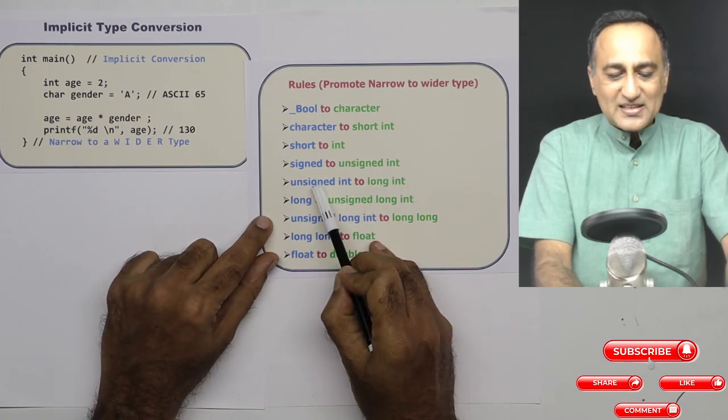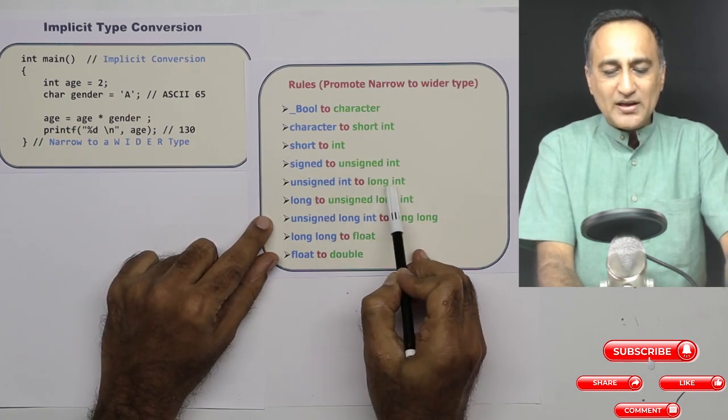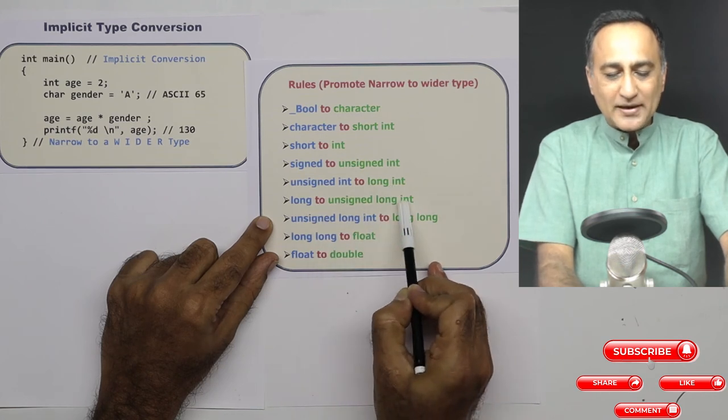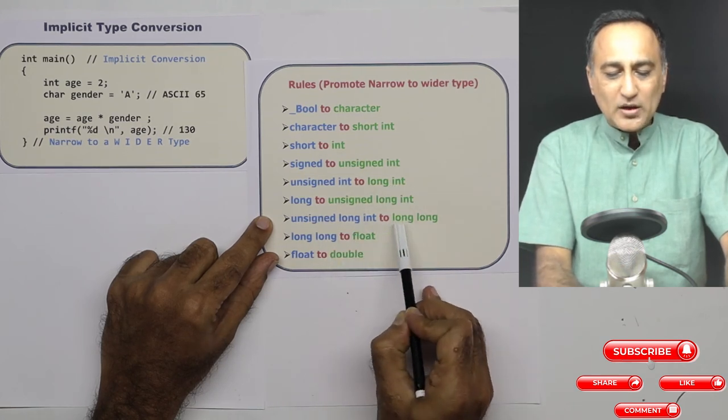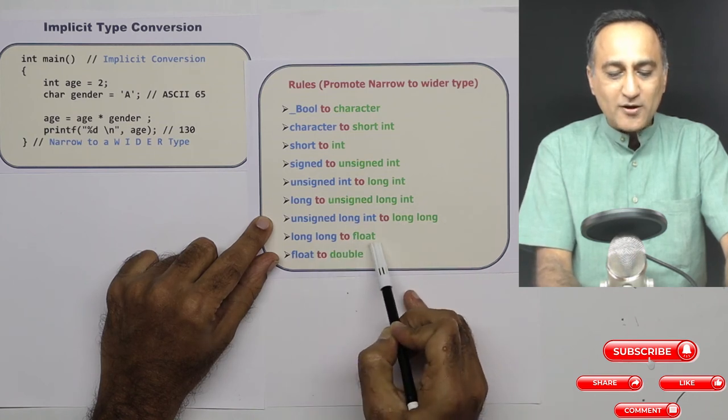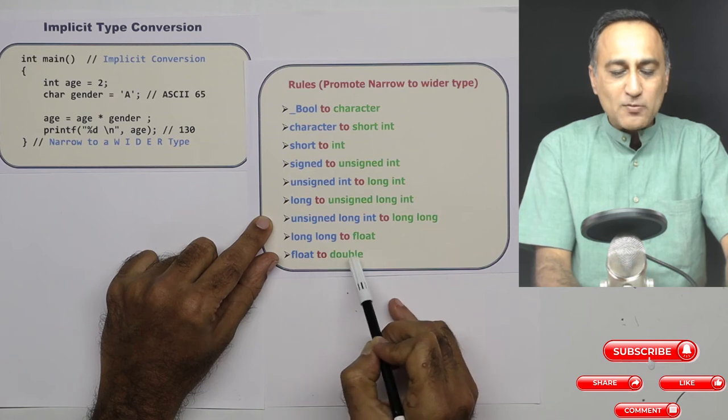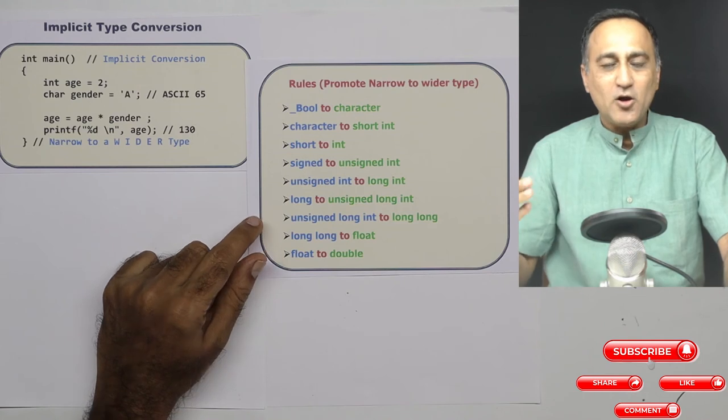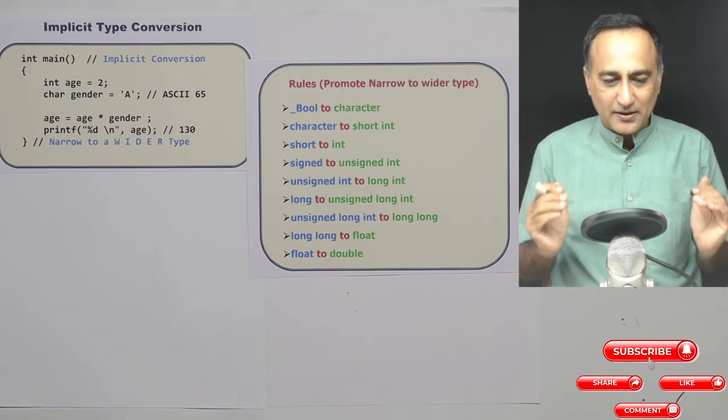Similarly an unsigned int is promoted to a long int, long int to an unsigned long int, unsigned long int to a long long int, and a long long is promoted to a float. A float is promoted to a double, and finally a double is also promoted to a long double or if there is any higher data type.